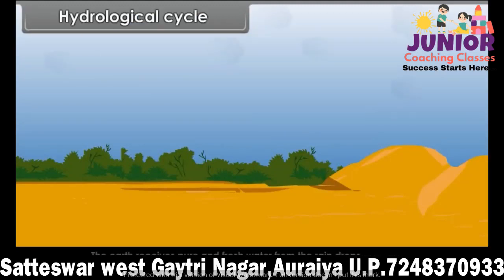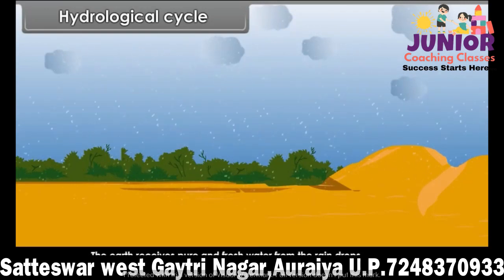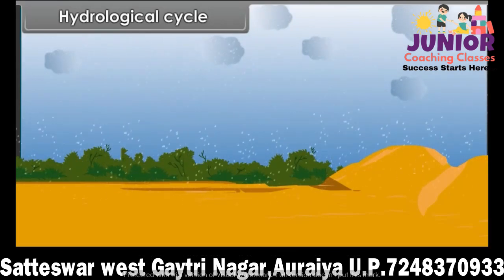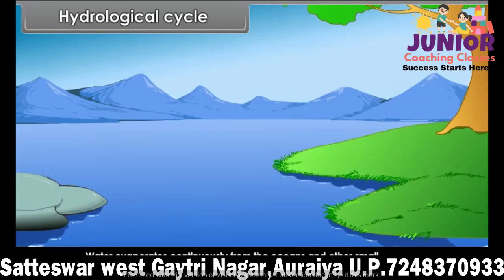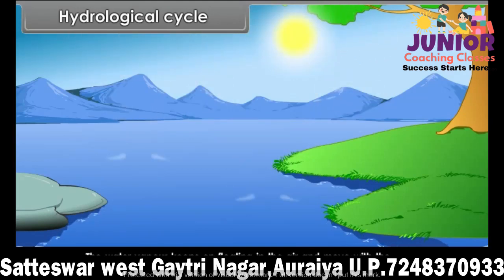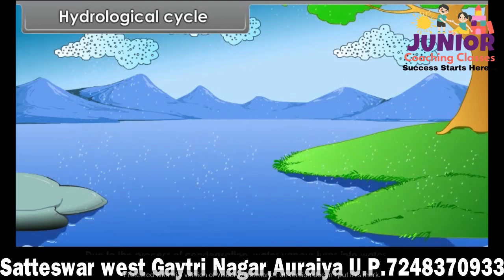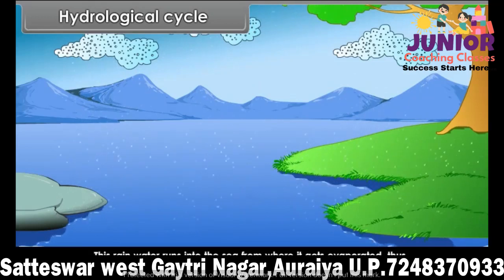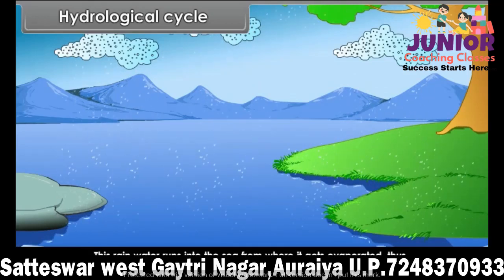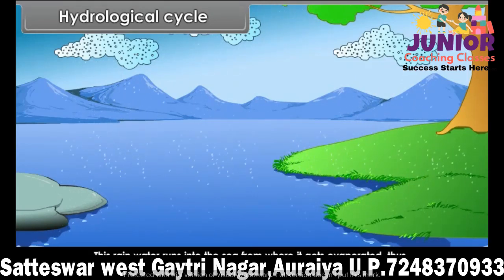Hydrological cycle. The earth receives pure and fresh water from raindrops condensing in the clean atmosphere. Surface springs also provide fresh water. Water evaporates continuously from the oceans and other small water bodies. This evaporated water enters into the atmosphere. The water vapor keeps on floating in the air and moves with the moving air. Due to the process of condensation, water vapor turns into water droplets and ultimately falls on the ground as rain or snow. This rain water runs into the sea, from where it gets evaporated, thus completing a cycle. This is known as the hydrological cycle.